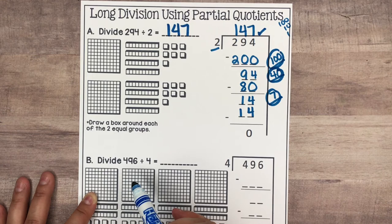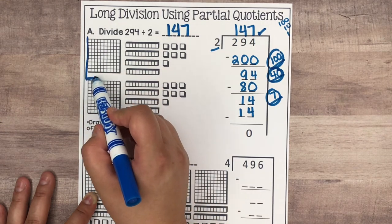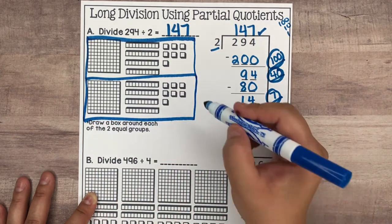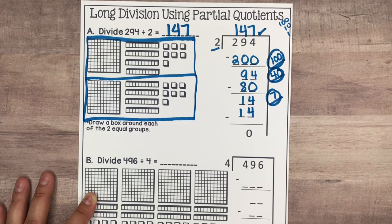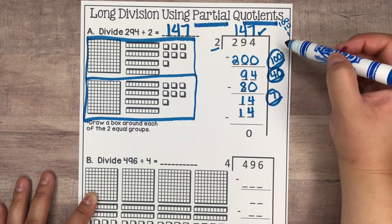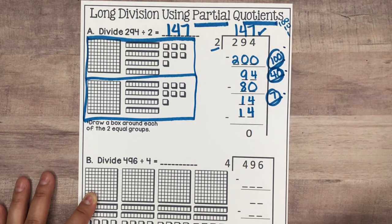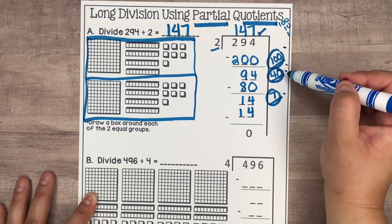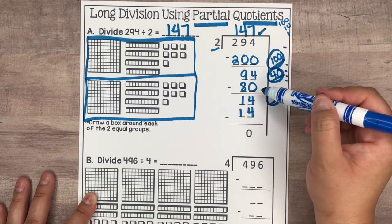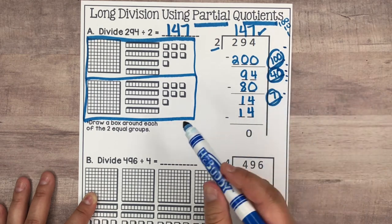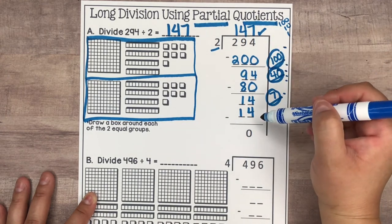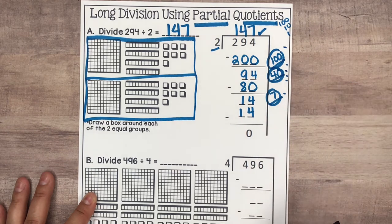Draw a box around each group — 147 is here and here, so you have two groups of 147. Here's the important part about partial quotients: there's not one way to solve. I chose 140 and 7, but you could have done 100, then 10, 10, 10, 10, 10, and 7. There are many ways to solve. I'm choosing the quicker way. Keep that in mind when you're solving on your own — in math, there may be many ways to solve the same problem.